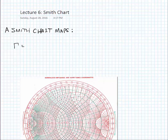So a Smith chart maps a complex impedance into a complex reflection coefficient which can be plotted on a polar-like chart.